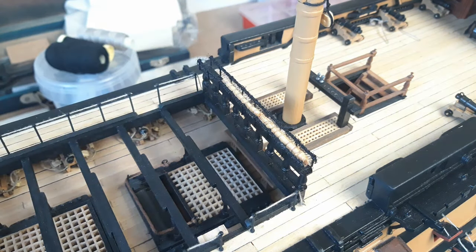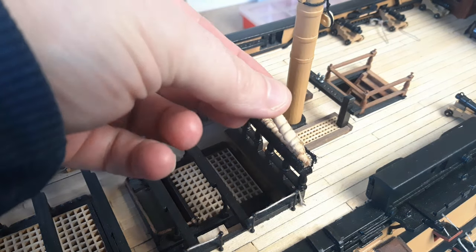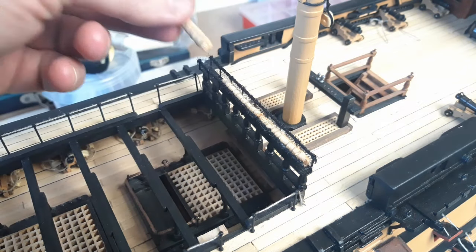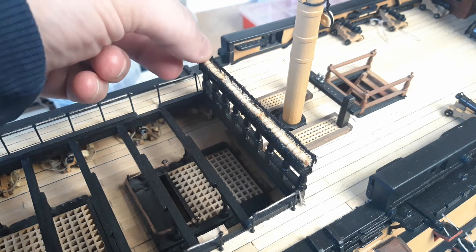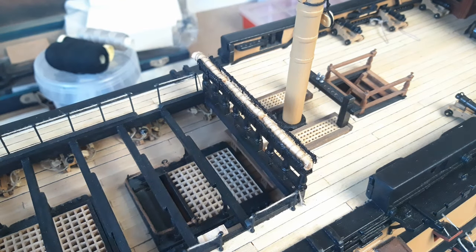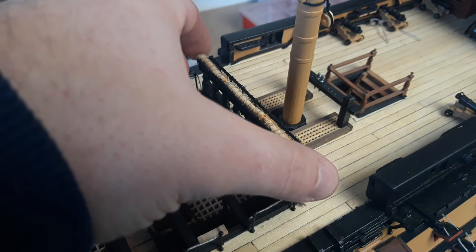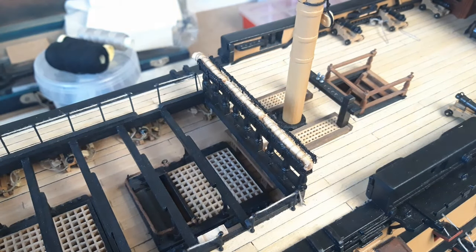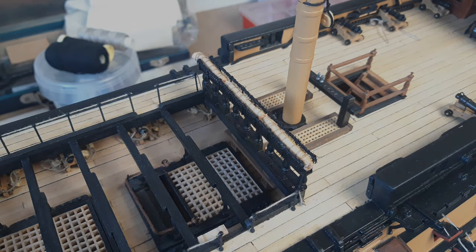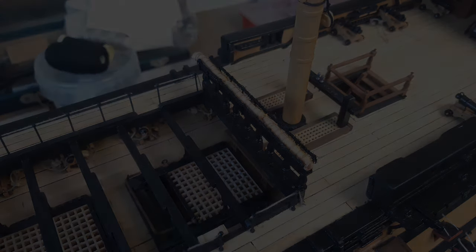So all that's left to do now is just install some of these hammocks. So I went by the size on the instructions but I think they're a little bit too long and look a bit too large. So I think I'm going to probably make some smaller ones. That's pretty much another main section of the quarter deck all finished.